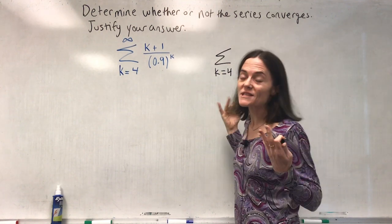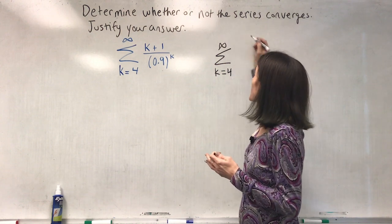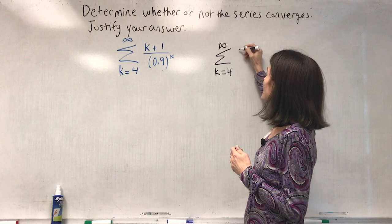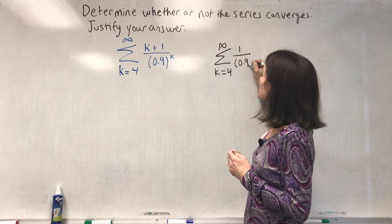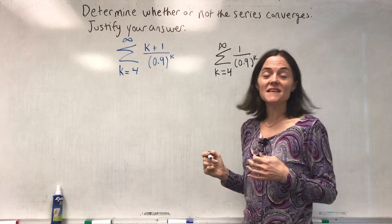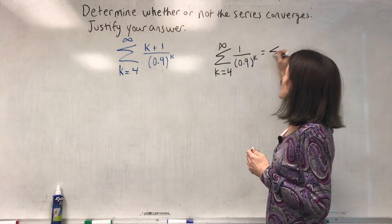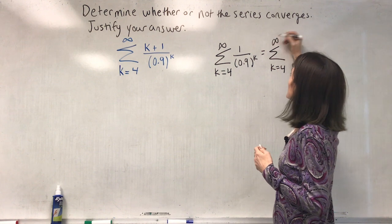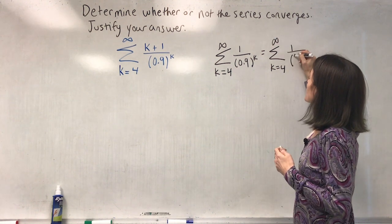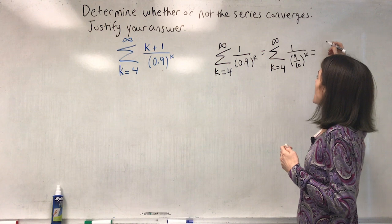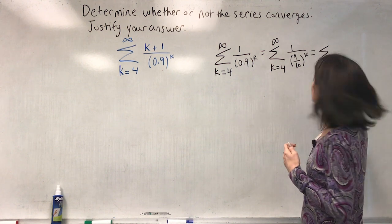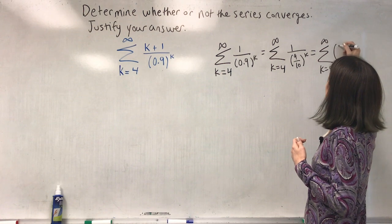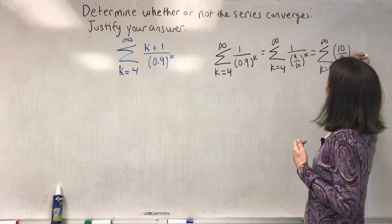We can start at four — I will start at four because this series starts at four, but it is not necessary. This is geometric. This is one over nine-tenths to the k, and then one more step: this is ten over nine to the k.